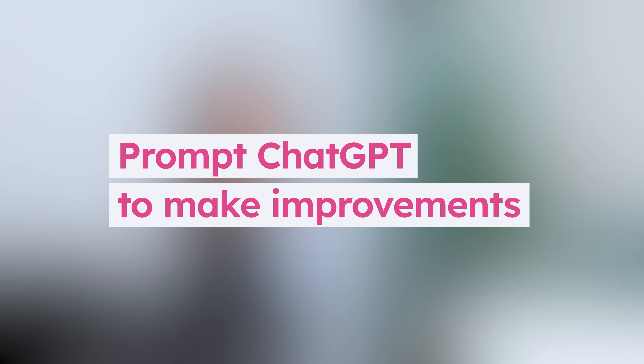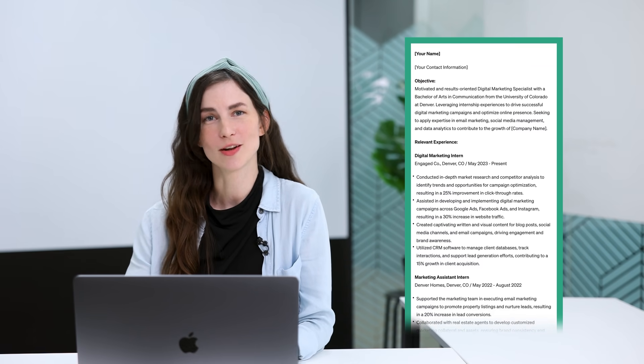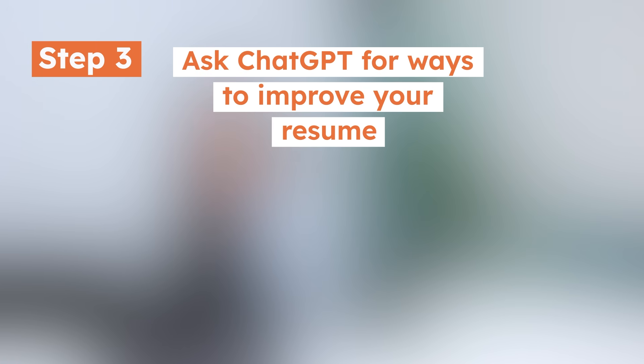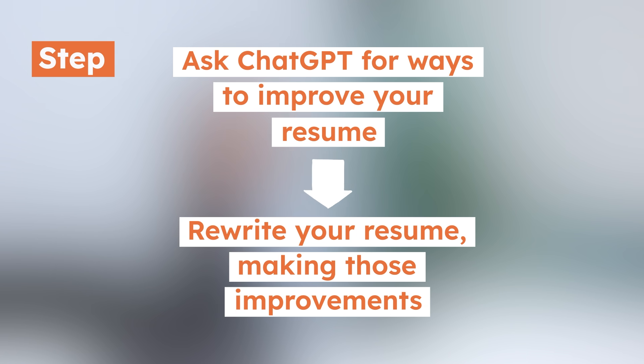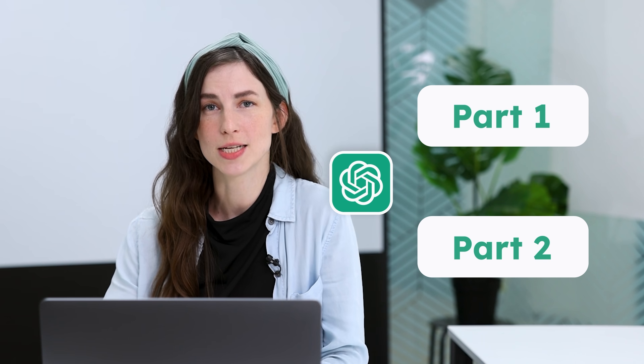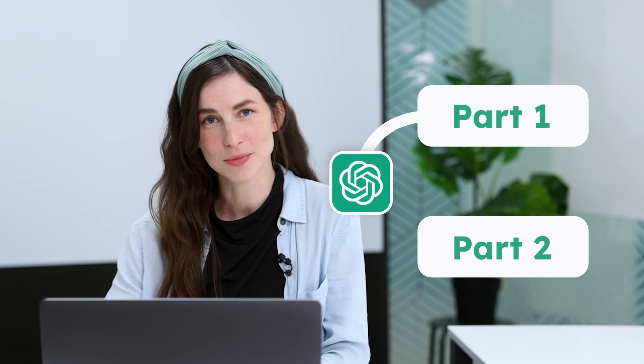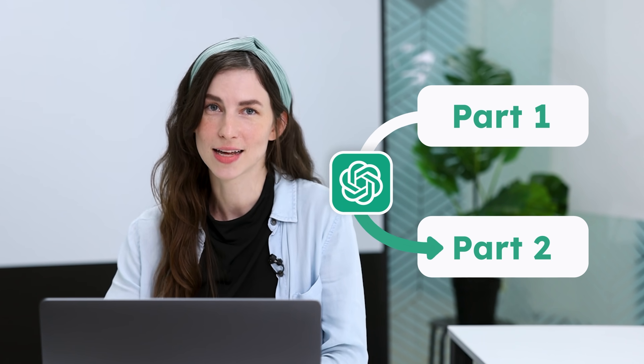Step 3: Prompt ChatGPT to make improvements. What you should have now is a basic resume that includes all your relevant information, but instead of agonizing over how to improve it, ChatGPT can help you polish your resume. We'll use a two-part prompt — first asking ChatGPT for improvement suggestions, then having it rewrite the resume making those improvements. Breaking this into two prompts produces better results because ChatGPT can use its own response from the first prompt to inform the changes it makes in the second.